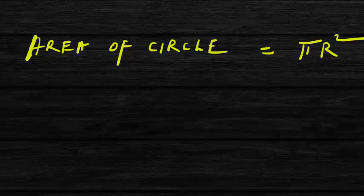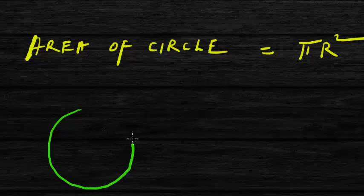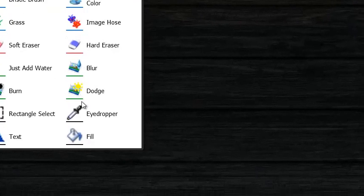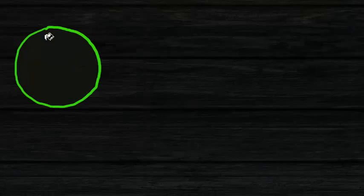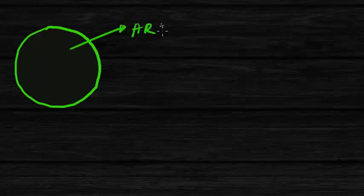What is the area of a circle? Suppose this is any given circle. The area of a circle is the region enclosed by the boundary of the circle. This dark green region is the area of the circle.